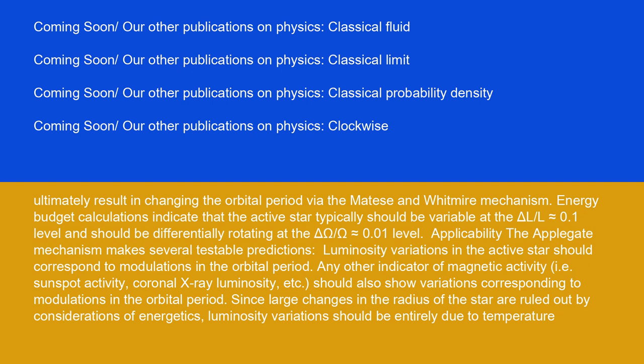Energy budget calculations indicate that the active star typically should be variable at the ΔL/L ≈ 0.1 level and should be differentially rotating at the Δω/ω ≈ 0.01 level.